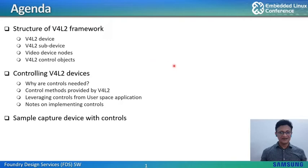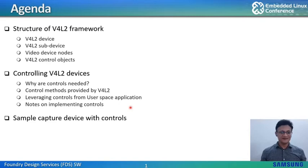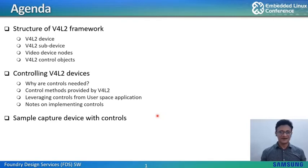Then we move on to the topic of controlling V4L2 devices — that is, why controls are needed, the control methods provided by V4L2, and how user applications can leverage these controls. We have also prepared a few notes based on our experience implementing controls. Finally, we will present a sample capture application with the control methods discussed, as well as the V4L2CTL utility provided by the V4Lutils package. We hope the audience will gain fair knowledge of V4L2 controls and using these controls for capture devices.